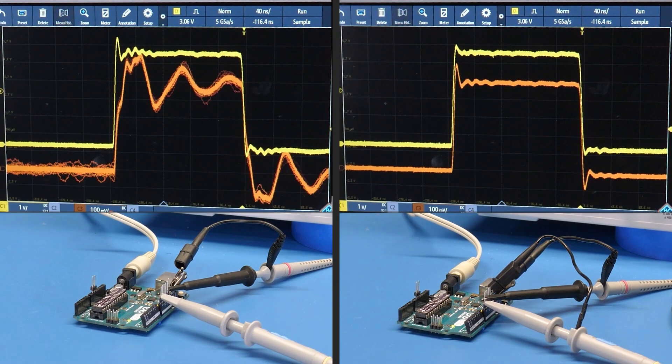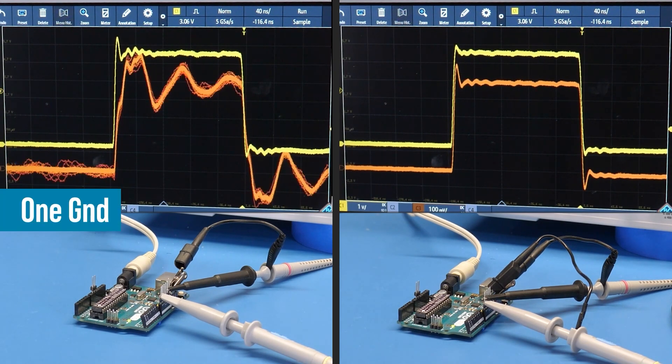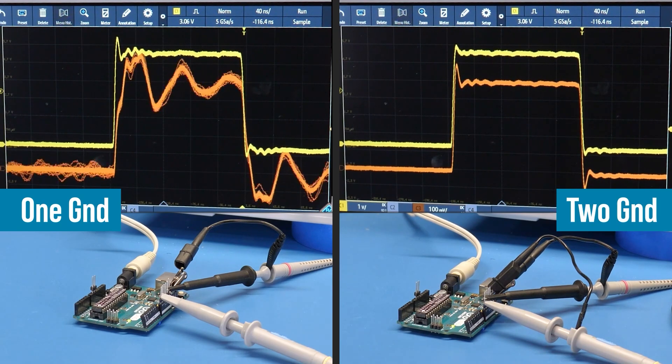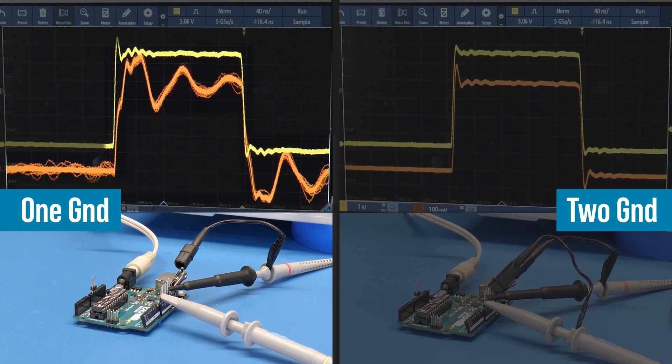Here is the key comparison for this video. Two probes on the same DUT. One ground on the left and two grounds on the right. Kind of a big difference right? You can tell the circuit with a single grounded probe has a ton of noise.